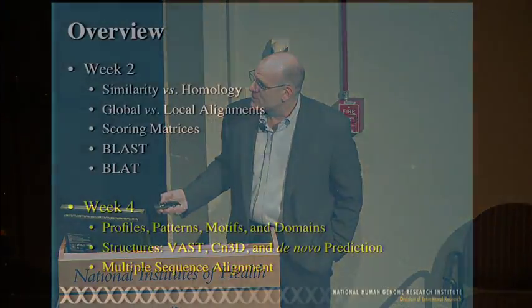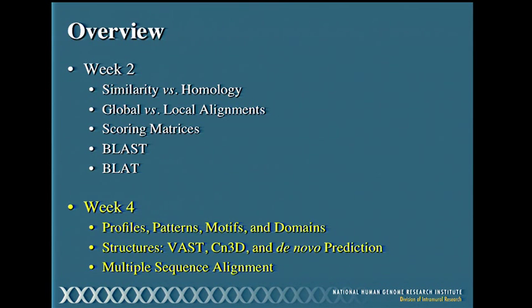We're going to continue our discussion of what can be done at the protein level by looking at profiles, patterns, motifs, and domains. We'll then switch to thinking about three-dimensional structures to consider approaches that address similarity. Finally, we'll wrap everything together with a discussion of multiple sequence alignments—the nuances of how to do them, how to interpret them, and more importantly, how not to over-interpret them.